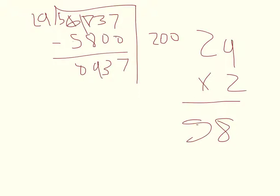29 times 3 is 87, so 29 times 30 would be 870. Let's subtract that. Now we have 67 left over.